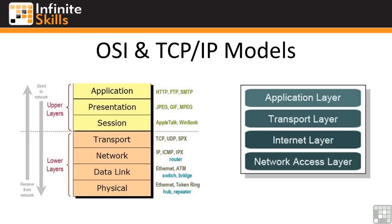In the TCP/IP model we have the network access layer at the bottom of the stack. These are called stacks — you'll often hear people talk about protocol stacks — because the different layers stack on top of each other. At the very bottom of the TCP/IP model we have the network access layer, above that is the internet layer, then the transport layer, and finally at the very top the application layer.